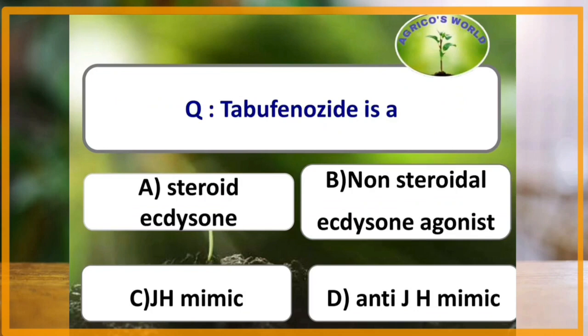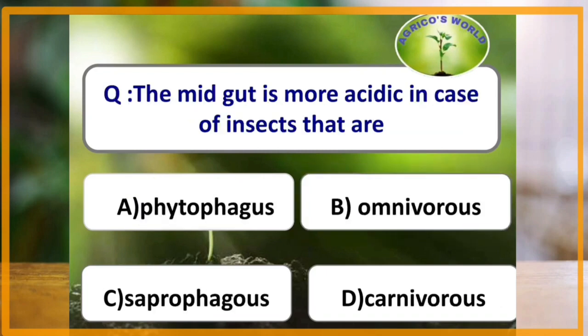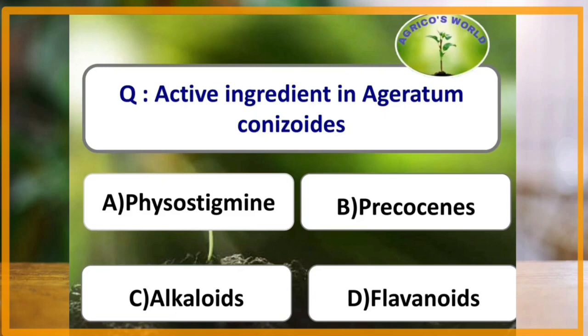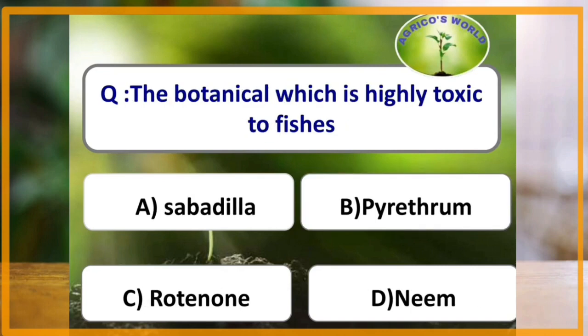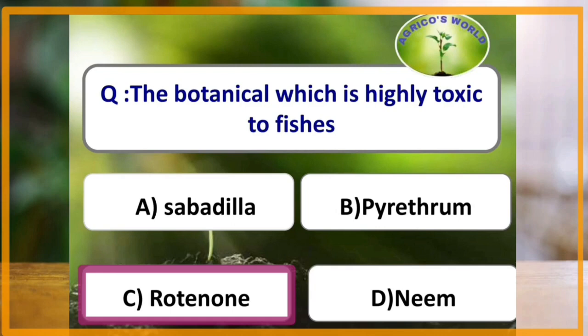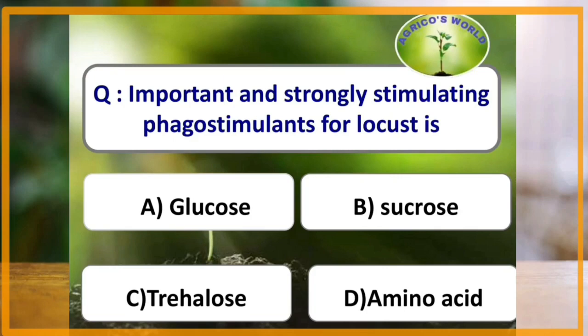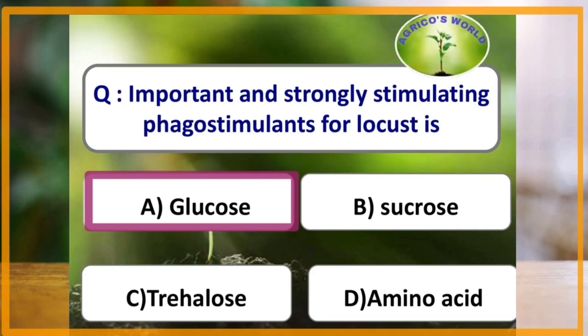Tebufenozide is a non-steroidal ecdysone agonist. The midgut is more acidic in case of insects that are carnivorous. Active ingredient in acaricide conazoids is precocene. The botanical which is highly toxic to fishes is rotenone, which is derived from the roots of Derris elliptica.